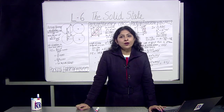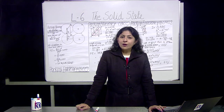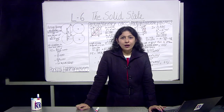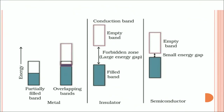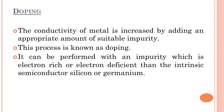Examples of semiconductors are silicon and germanium. The conductivity of semiconductors can be increased by adding an appropriate amount of suitable impurity — a process known as doping. Doping can be performed with an electron-rich or electron-deficient impurity relative to the intrinsic semiconductor. For example, if sodium chloride is doped with 10⁻³ mole percent of strontium chloride, 1 cation of strontium creates 1 cation vacancy in sodium chloride.